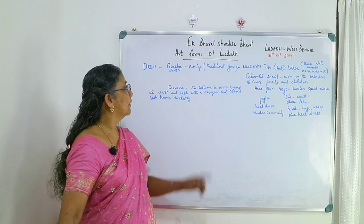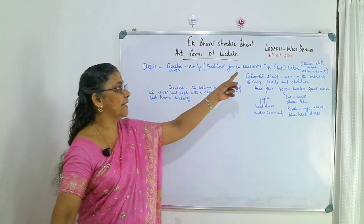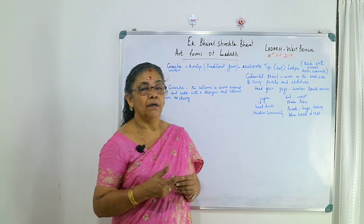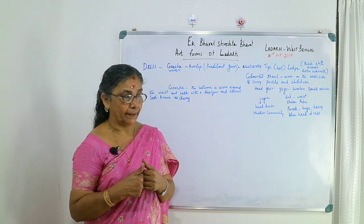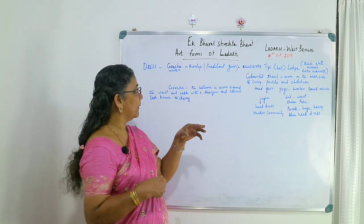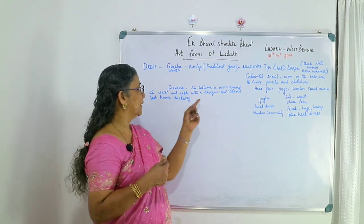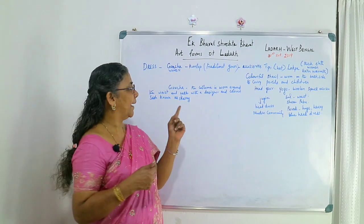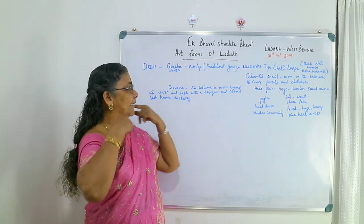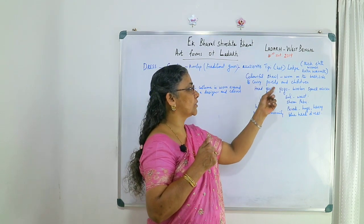Let us see the dress forms of Ladakh people. Goucha is a gown — a thick cloth worn by women which gives extra warmth. The same name Goucha is also a gown used by men. The costume is worn around the waist and neck, and a colored sash known as Skara is used. They also use colorful shawls.